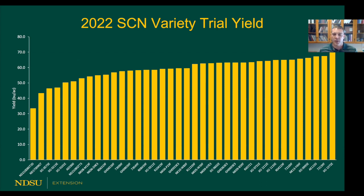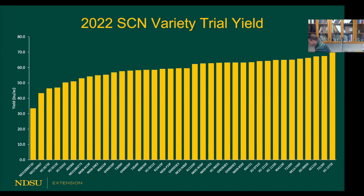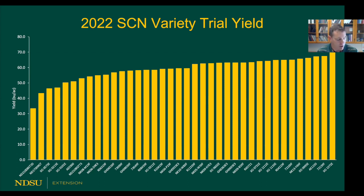One tool you can use comes from the variety trial booklet that Hans Kandel puts together — Carrie Miranda is the breeder with a lot of tables and data in there. I want to point your eyes to Table 5. That table has variety trials, actually three of them, on SCN ground. What I'm doing is putting the average yield of all those varieties on a histogram.